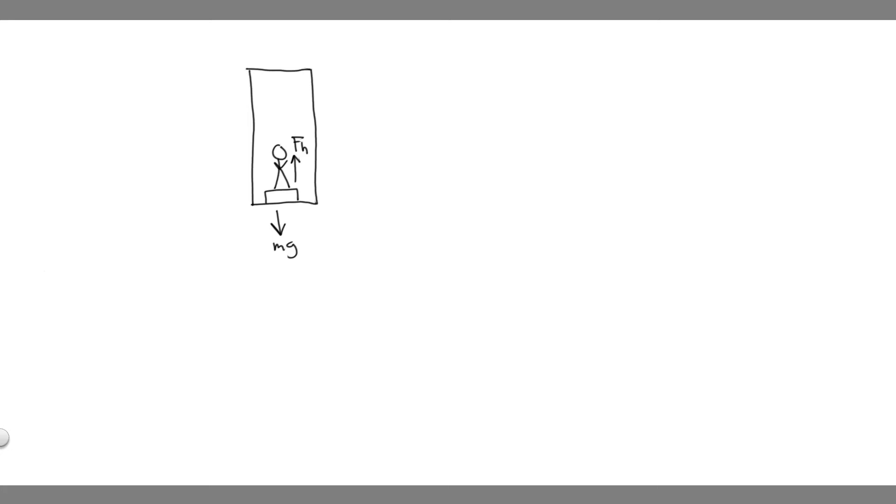In this problem, we're told when you weigh yourself on solid ground, your weight is 142 pounds. In an elevator, your apparent weight is 121 pounds. What are the direction and magnitude of the elevator's acceleration?